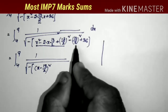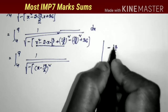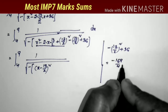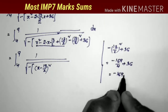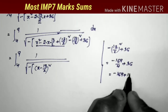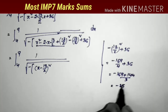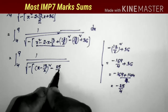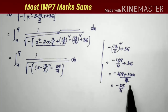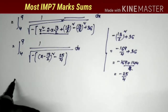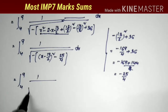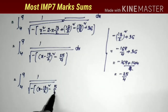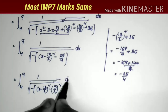Now simplifying the remaining constants: minus (13/2) squared plus 36 equals minus 169/4 plus 36. Taking LCM gives (minus 169 plus 144)/4 = minus 25/4. So substituting, we get integral from 4 to 9 of 1 by square root of minus of [(x minus 13/2) squared minus (5/2) squared] dx, since 25/4 equals (5/2) squared.